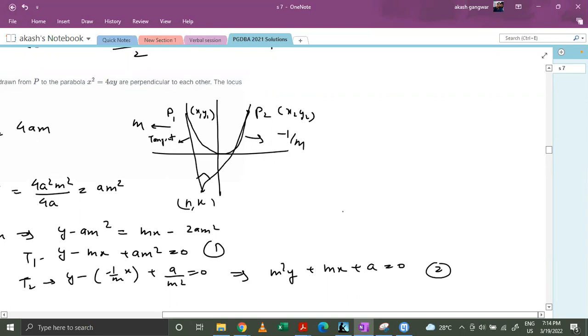So what we will get is m square plus 1 times k, mh and mh will get cancelled out plus a times m square plus 1 equals to 0. We can clearly see that k equals to minus a.